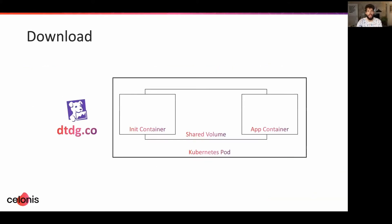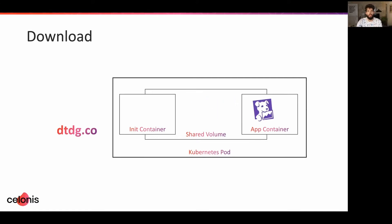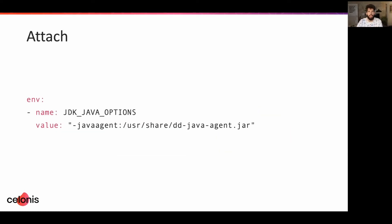Instead of embedding the agent file into the Docker image of our application, we use an init container to download the file into a shared Kubernetes volume. This volume is shared between the init and application container. Now we have the agent.jar file in place. Rather than asking everyone to adapt the entry point of their application — which unnecessarily couples the monitoring logic to the application — we use the JDK_JAVA_OPTIONS environment variable. All it does is prepend its content to the options parsed from the command line when running the Java command, which is especially useful in containerized environments where setting environment variables is usually pretty simple.